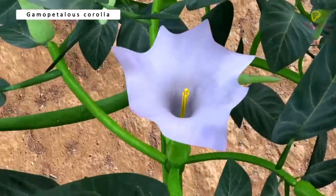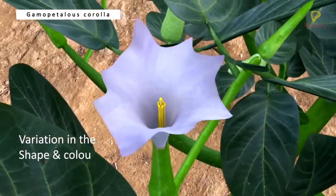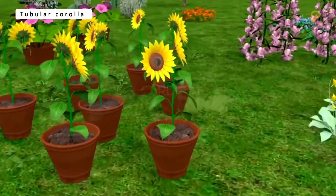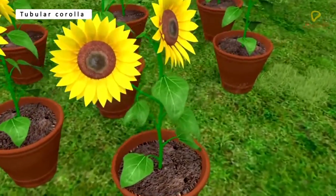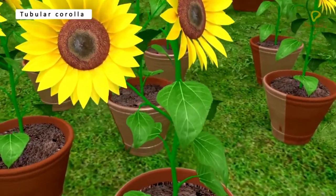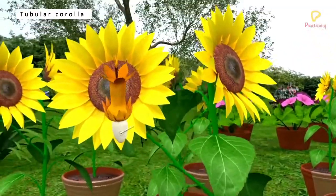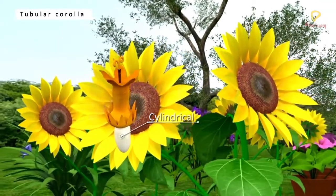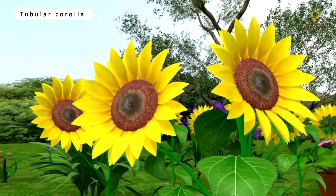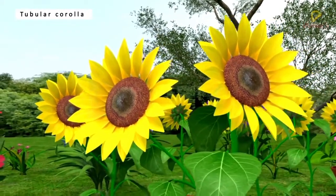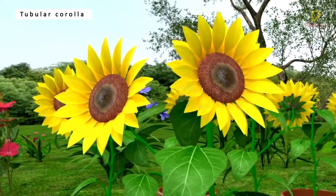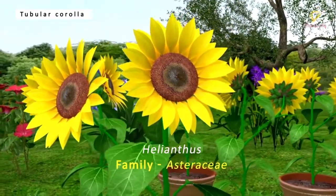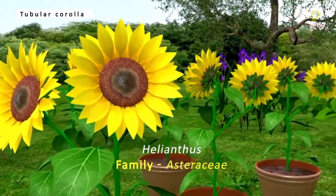The shape and color of corolla vary greatly in plants. Shapes of corolla: Tubular — it is a tube-like gamopetalous corolla. The corolla is cylindrical or tube-like and expands more or less equally from base to apex. Tubular corolla is seen in the disc florets of Helianthus. Helianthus is a member of the family Asteraceae.